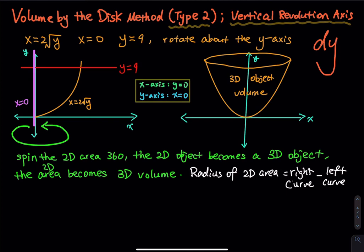Let's take a look at this example. We have x = 2√y, x = 0, y = 9, and we rotate about the y-axis. So x = 2√y — in case you are wondering how to graph a function of the form x = f(y)...